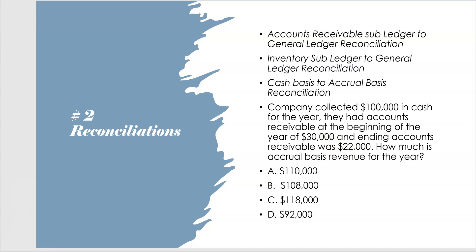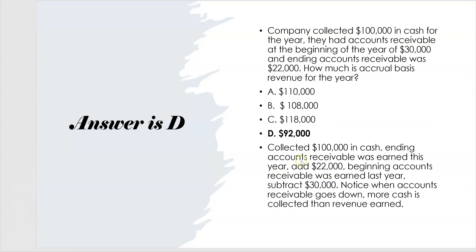How would you approach something like this? Because you are almost guaranteed to see this kind of question. Well, here's what you would do. If you collected $100,000 in cash, then your ending accounts receivable — which they gave you at $22,000 — that's the amount you earned this year but won't collect until next year. So that $22,000 was earned this year, add that to the $100,000, you're at $122,000. Beginning accounts receivable was $30,000 — that was earned last year, because last year's ending receivable is this year's beginning receivable. So you've got to subtract the $30,000, otherwise you'll be double counting it — that's like Enron accounting. Subtract $30,000 because it wasn't earned this year, even though it was collected this year. So $122,000 minus $30,000 gives you $92,000 — that's how much is earned revenue this year.